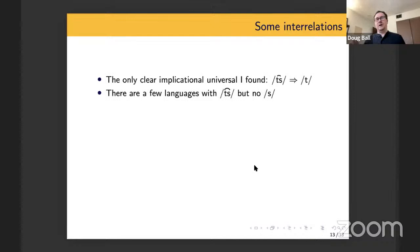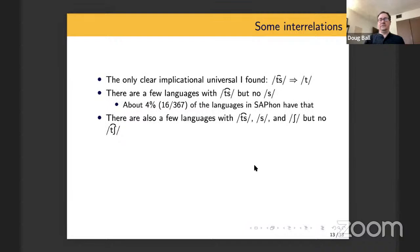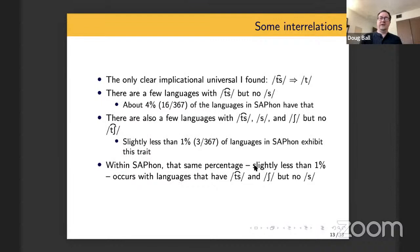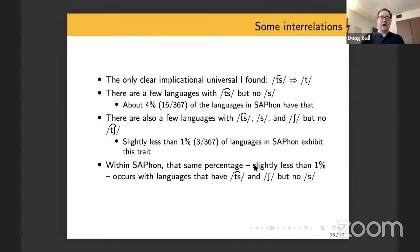I did look at some other interrelations between the sibilant affricates and the sibilant fricatives. So there are a few languages with TS but no S phoneme. This occurs in 4% of the languages in SAPhon, so I think this is an option. I also was curious if there are any languages that had TS, S, and SH, but no CH, this sort of asymmetrical system. And this occurs in a few languages. It's not particularly common, but I think we can say that it exists. This also got me wondering, well, are there any languages that have TS and SH and nothing else? And it seems that there are a few languages of that, though again, it occurs in precious few, at least within SAPhon.